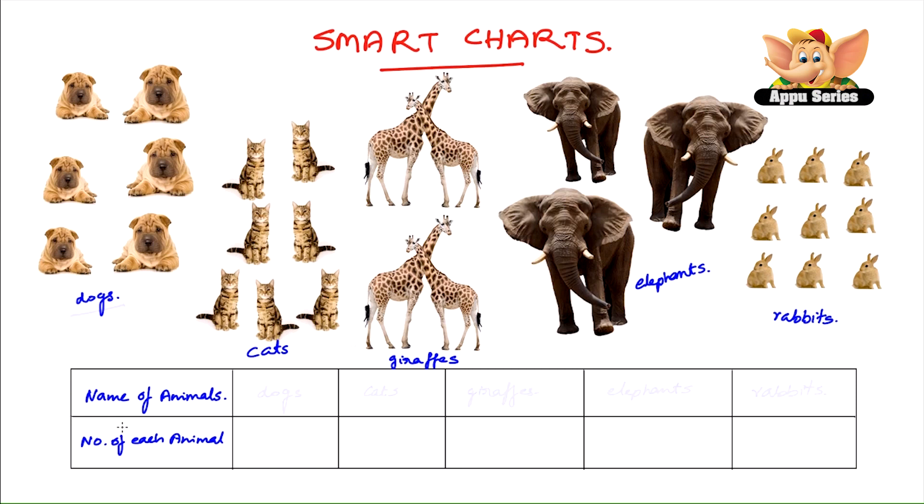Let's count the number of animals in each category. So now we have six dogs here, let's put six under the dogs. Over here we have seven cats, so that goes seven under cats. Four giraffes, so that's four under giraffes. And elephants we have three, so that's three elephants over here. And nine rabbits. So you're right, that was pretty easy huh?